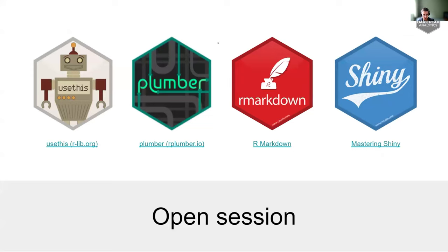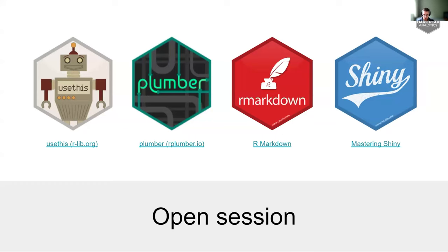One of the first questions was around reviewing existing packages — packages that other people have created — and understanding whether they're safe to use. We have four commonly used packages here: the usethis package is often used to help build your own custom package; plumber is used for creating APIs; R Markdown is used for generating semi-automated reports where you have code chunks or outputs embedded in a written report; and Shiny is used for building user interfaces which can be deployed online to run your model for different parameter selections.